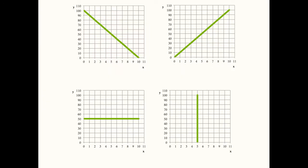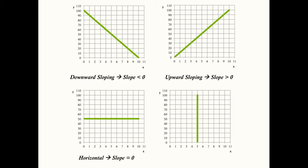So far we've been looking at graphs in this class, and if we look at these four graphs right here, we all notice the same thing: they're all lines. They represent linear equations. We know with the first graph that it's downward sloping — there's an inverse relationship between x and y, so that tells us that the slope is zero. The second graph tells us that the slope is positive. A horizontal line tells us that the slope is zero, and a vertical line tells us that the slope is undefined.